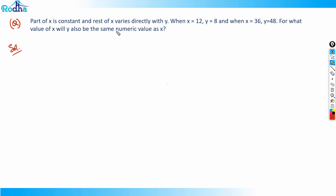This language is a bit tricky, so get used to it. Part of x is constant and the rest of x varies directly with y — that means x comprises two parts. The first part is a constant, let's call it 'a', and the other part varies directly with y, so we replace it with some constant 'b' times y.